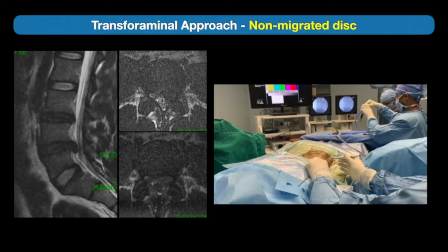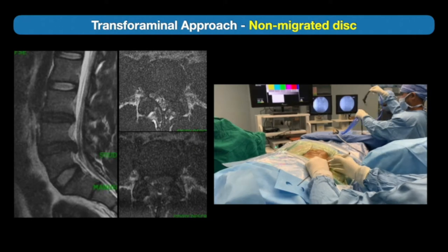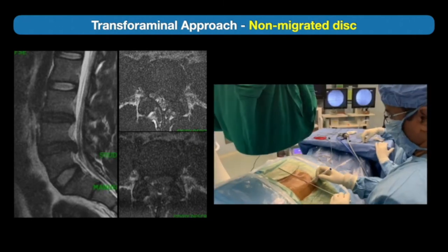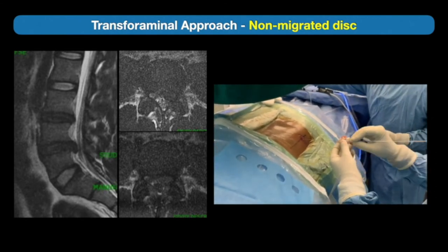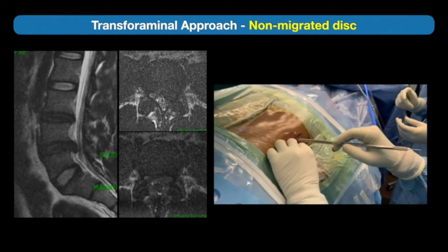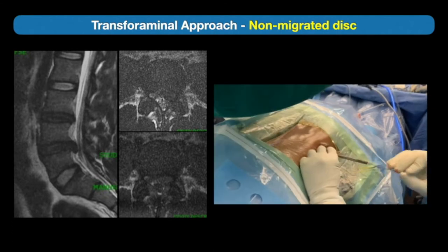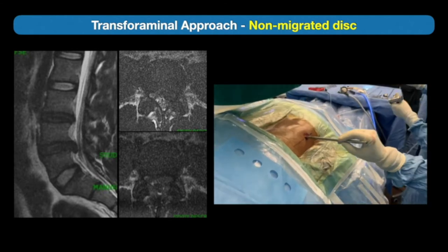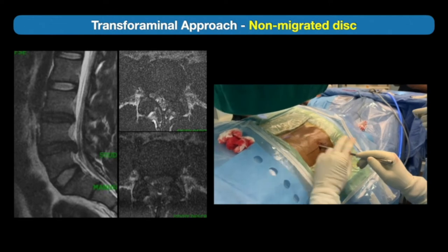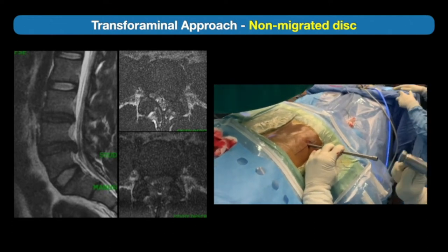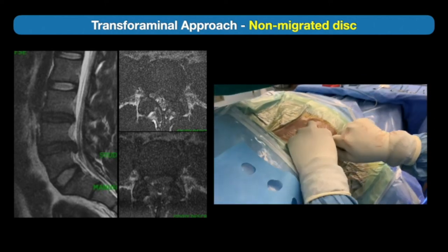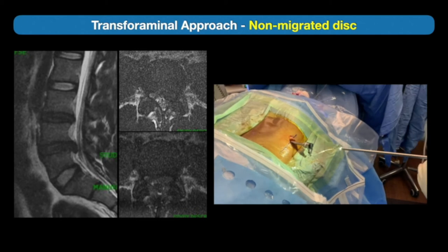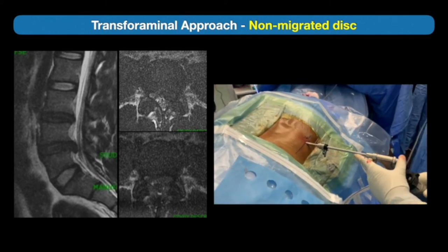Now let's talk about the transforaminal approach. First case: non-migrated L4-5 left paracentral herniation. This clinical video shows the entry of the endoscope. We mark the skin entry point for the needle, the needle is inserted once position is confirmed, the stylet is removed and a guide wire is inserted through the needle. The dilator is passed over the guide wire, and once position is confirmed, the working channel is inserted over the dilator and hammered inside the annulus to anchor it.